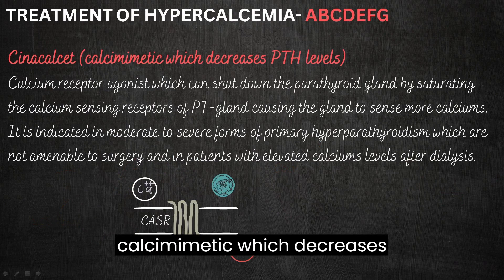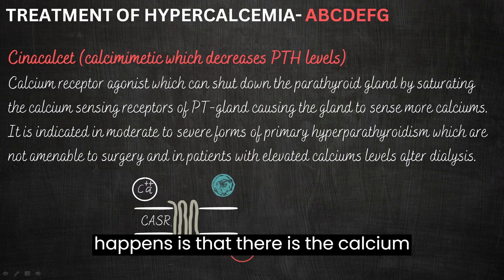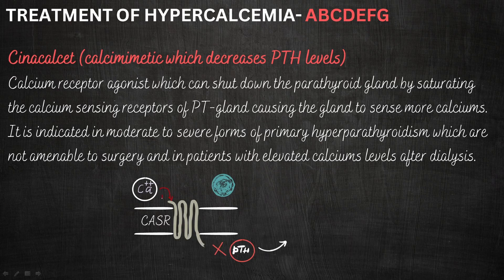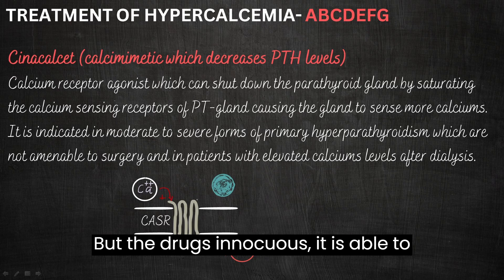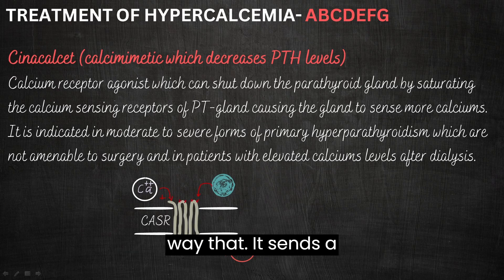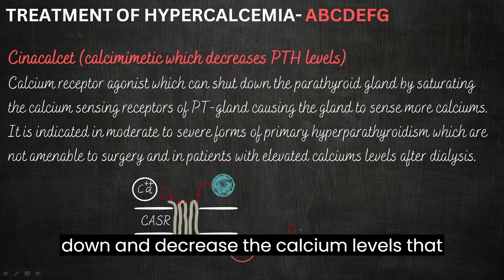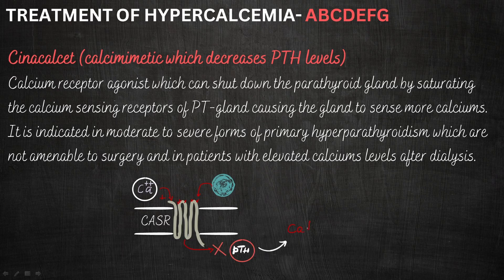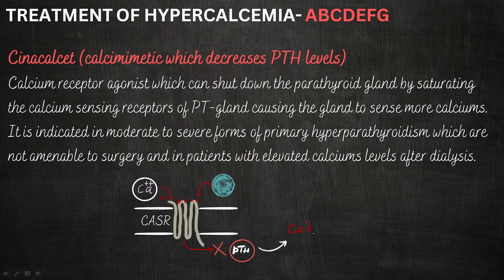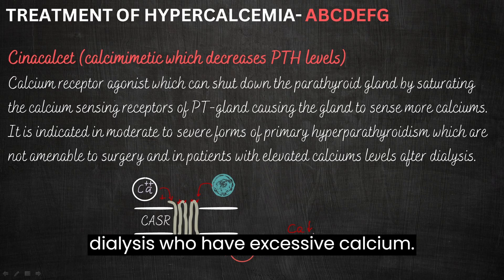Cinacalcet is a calcium mimetic which decreases parathyroid hormone levels. There are calcium-sensing receptors that normally bind to calcium, but cinacalcet saturates binding to those receptors itself, sending a signal to the parathyroid gland to shut down and decrease the calcium levels being released from the bone. It is indicated in moderate to severe primary hyperparathyroidism not amenable to surgery, and may also be used in dialysis patients who have excessive calcium.